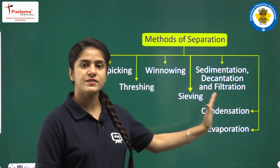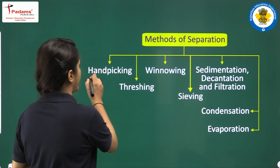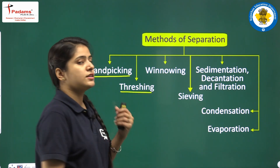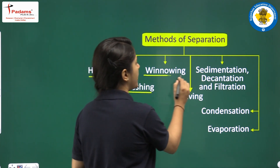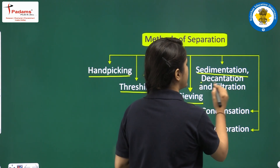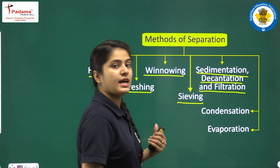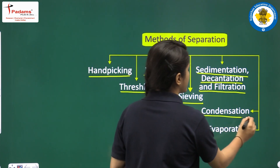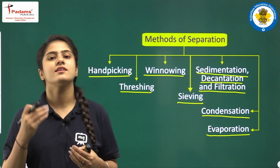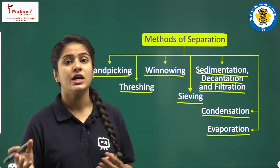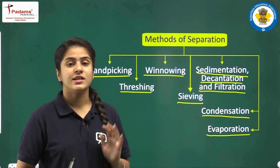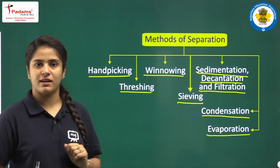The methods of separation are: first, hand picking; second, threshing; third, winnowing; fourth, sieving; then sedimentation, decantation, and filtration; and next, condensation and evaporation. We have a lot of methods to separate different substances. We'll discuss each one of them, starting with hand picking.